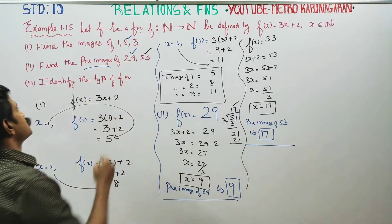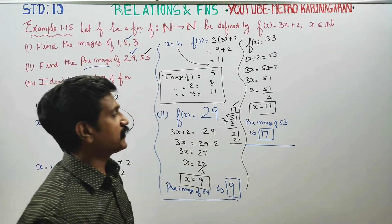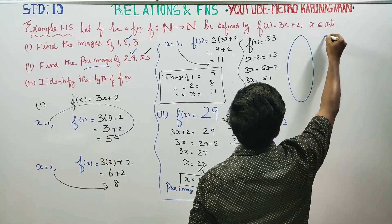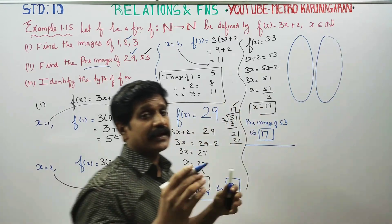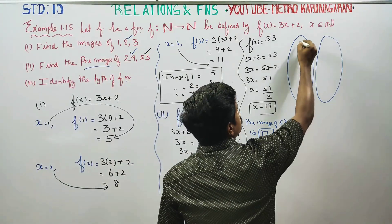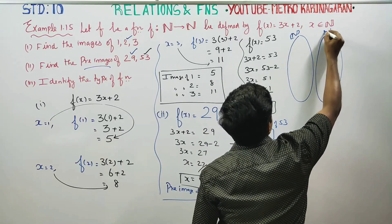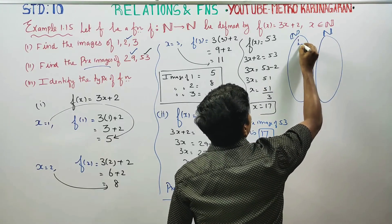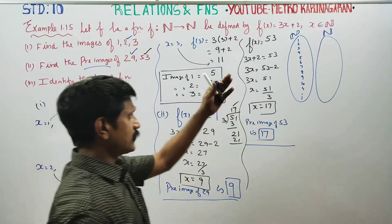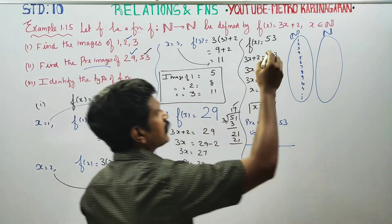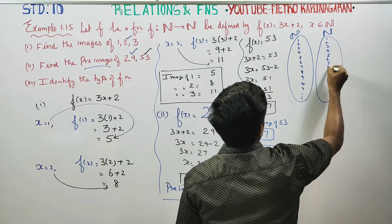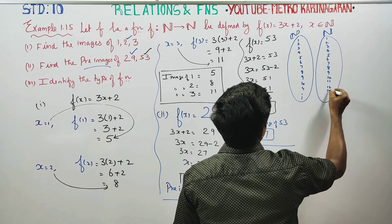Now identify the type of function using the arrow diagram. The function goes from natural numbers to natural numbers. The domain contains natural numbers 1, 2, 3, 4, 5, 6, 7, 8, 9, 10, 11, 12, 13 and so on. The co-domain also contains all natural numbers.